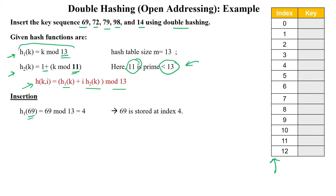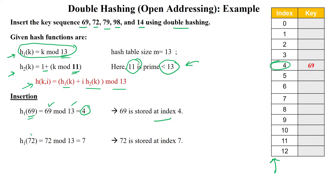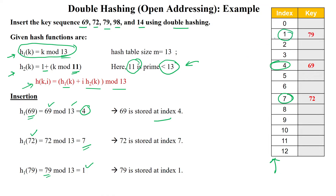To insert 69: the first hash function gives 69 mod 13 = 4, so 69 is stored at index 4. To insert 72: 72 mod 13 = 7, so 72 is stored at index 7. To insert 79: 79 mod 13 = 1, so 79 is stored at index 1.